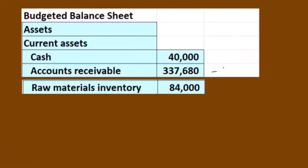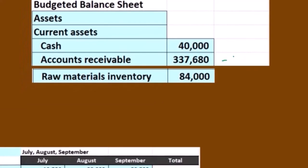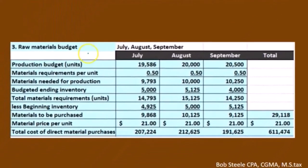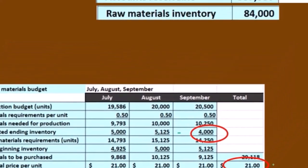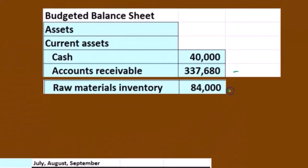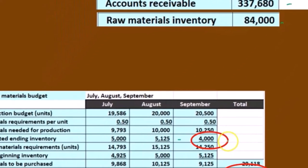Next is raw materials. We take that from step three in our budgets — the raw materials budget. We take the ending balance in units and multiply it by the $21 per unit price, which gives us an ending raw materials balance of $84,000. Remember, we're looking at where we stand at the end of the time period, so we use the ending amount.